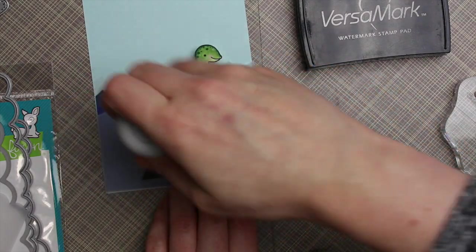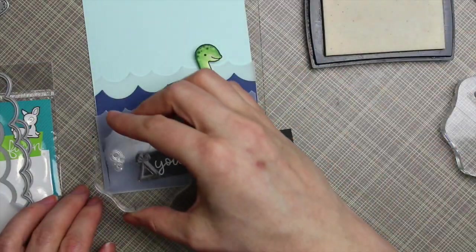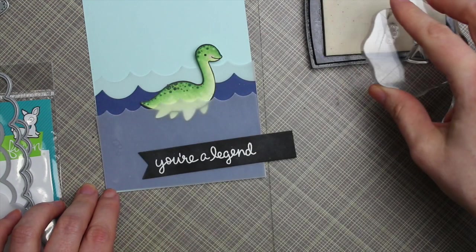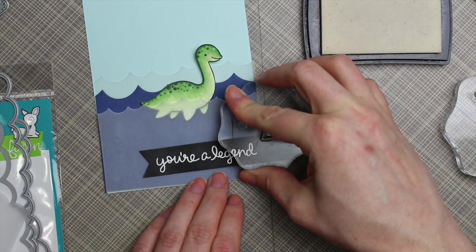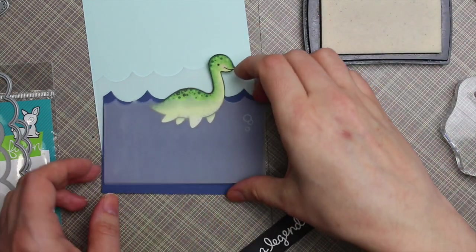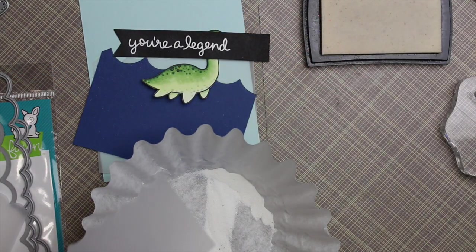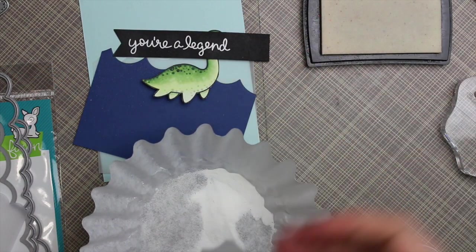So I've got, there's a little bubble stamp that comes in the Lovable Legends set. And I coated that vellum with the same anti-static powder and then just stamped that bubble image a couple times on there with the same Versamark ink, and then coated that with the same detail white embossing powder, and then quickly heat that with my heat tool.